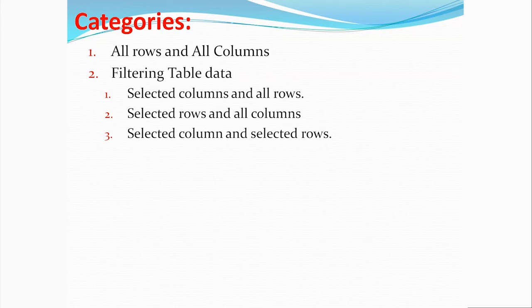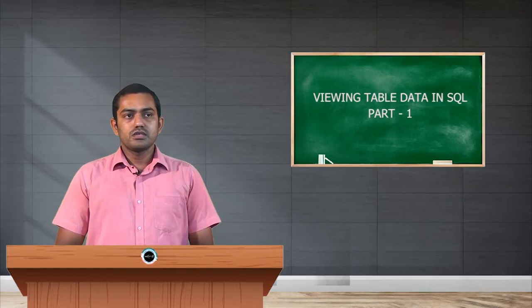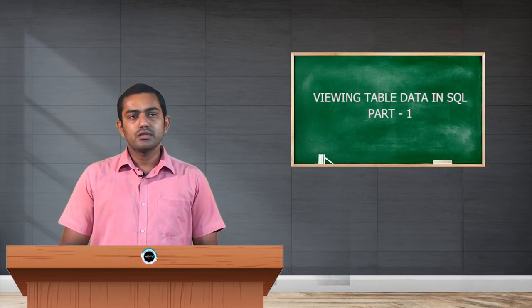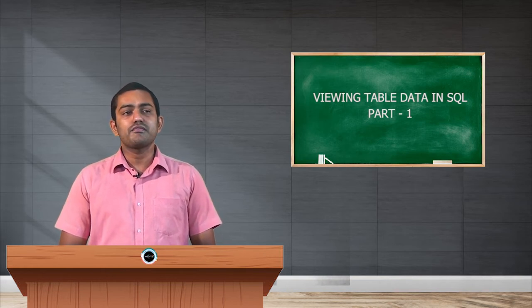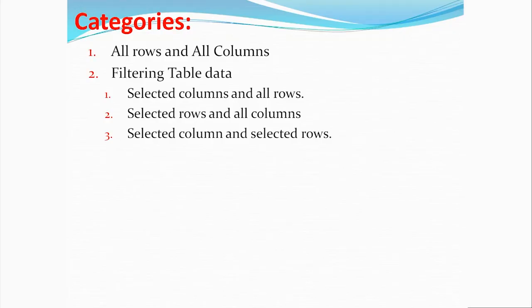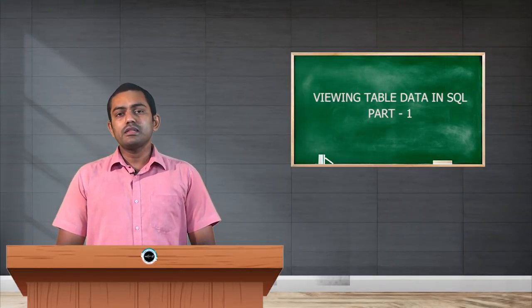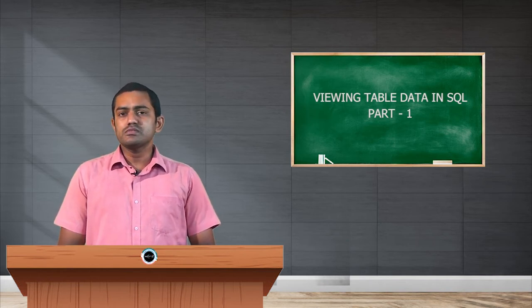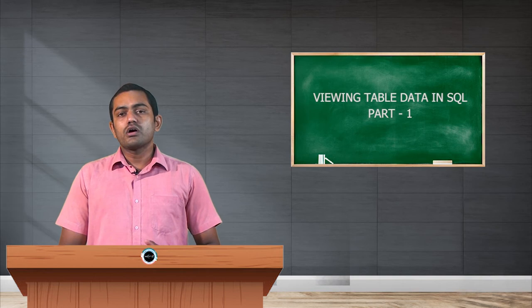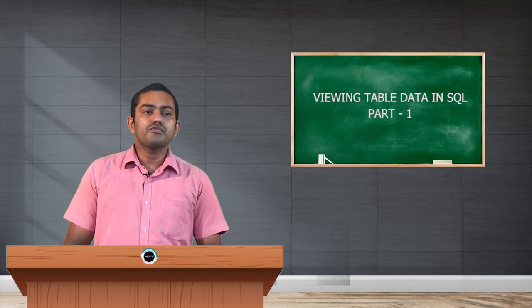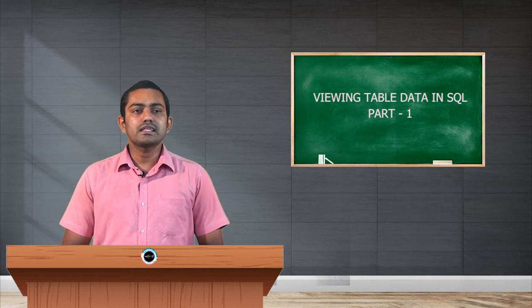In the first category, all rows and all columns means the entire details — all rows and all columns present in our table. In the second category, filtering the table data, the first option is selected columns and all rows. We may face situations where we need only some columns but the entire records of all students or entities to be displayed.